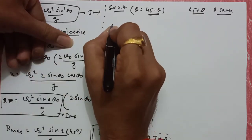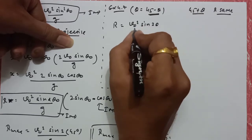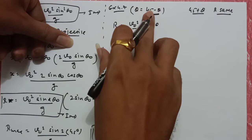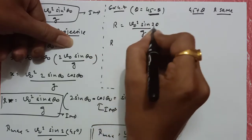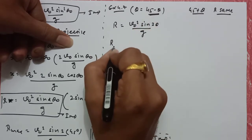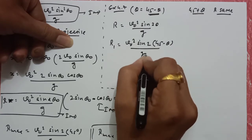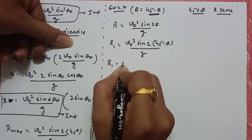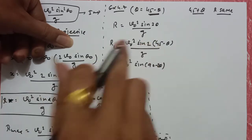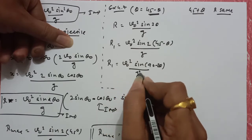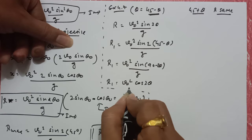Range का formula क्या है, चलो पहले range का formula लिखते हैं। Range का formula हमने यहीं पे derive किया था: V0 square, sin 2 theta, by G. Question में यह बोला है कि अगर आपके पास 45 minus theta है और 45 plus theta है, तो दोनों में range same मिलेगी, prove करना है उसको। So R1 is equal to V0 square sin 2(45 minus theta) by G, so R1 is equal to V0 square sin(90 minus 2 theta) by G. sin(90 minus 2 theta) gives cos 2 theta, so R1 = V0 square cos 2 theta by G.